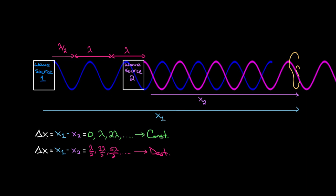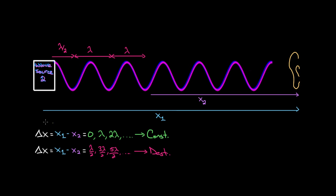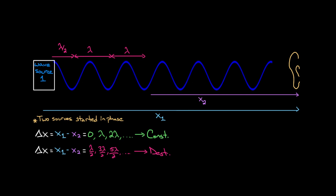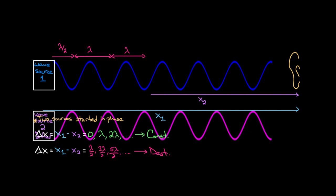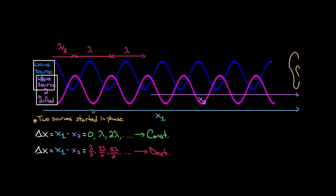So this is how path length differences between two wave sources determine whether you get constructive or destructive interference. But notice — we started with two wave sources that were in phase, so this whole analysis assumes the two sources started in phase with each other, neither of them pi-shifted. What would this analysis give you if we started with one that was pi-shifted?